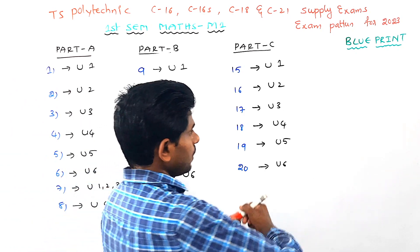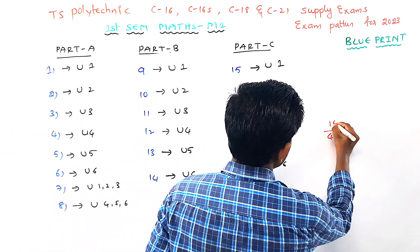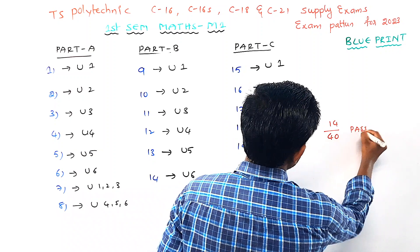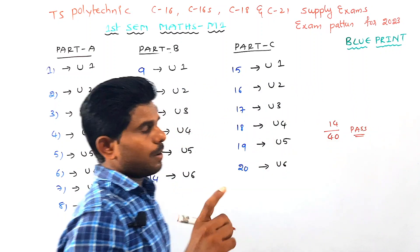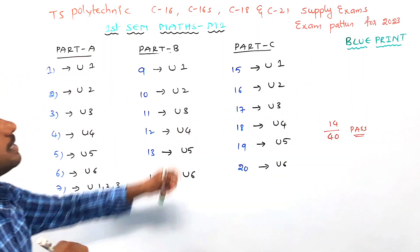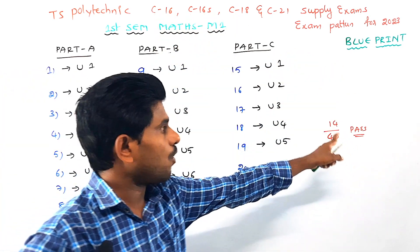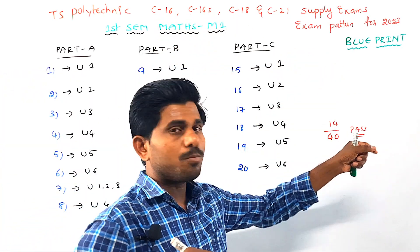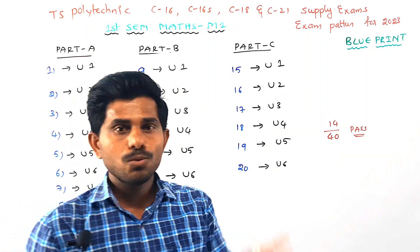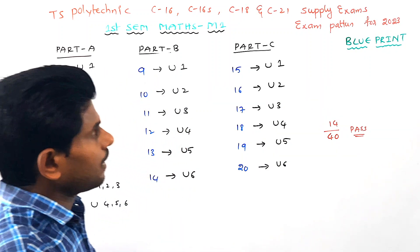We have 40 marks in the paper. Out of 40, you need to pass with 14 marks. For C16, C16S, and C18, you need 14 marks to pass.